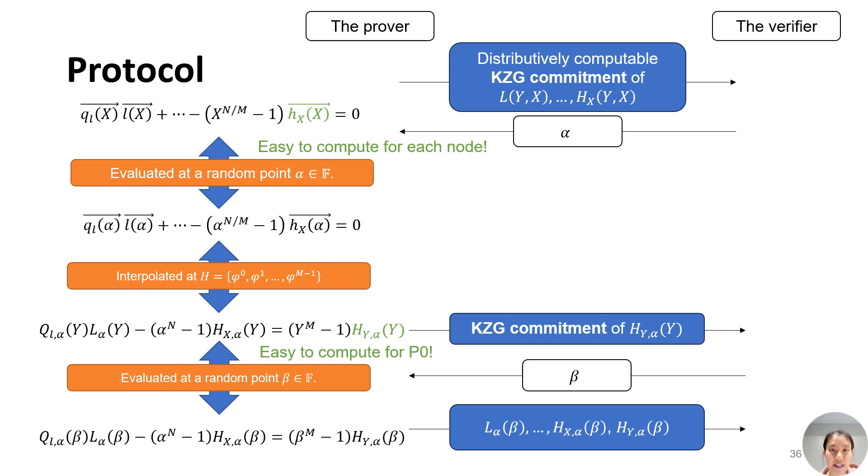After completing this process with distributedly computable bivariate KZG scheme, we derive the whole protocol. At the very beginning, the prover distributedly commits all polynomials. Then, after the workers send their evaluations to the master node, the master node computes a new witness H_y(alpha) of y and commits it. In the end, the prover generates all evaluations and the PCS opening proof to the verifier.